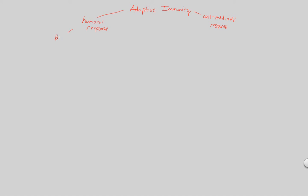The humoral response is the response occurring throughout the blood and lymph of the organism. A pathogen has the capability of traveling throughout the blood and lymph, infecting many cells throughout the body, so the immune system needs something that can also travel throughout the body. That is the humoral response, which involves antibodies. Antibodies are soluble, meaning they can travel throughout the blood and lymph — which are solvent-like materials — and find and destroy or help defend against the pathogen.